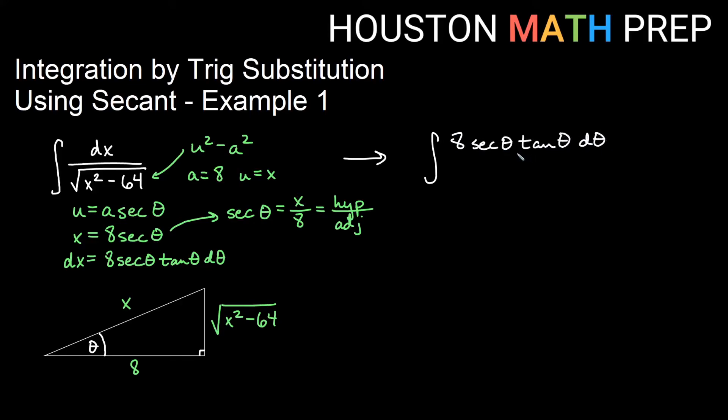And then on the bottom, we will have the square root of x squared. Now x is 8 secant theta. So x squared would be 64 secant squared theta minus the 64 that we already have.